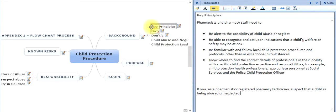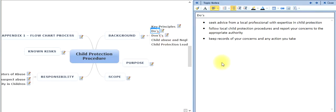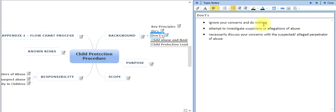If you as a pharmacist believe that a child is being neglected or abused, you should seek advice from a local professional with expertise in child protection, follow local child protection procedures and report your concerns to the appropriate authority, and keep records of your concerns and the actions you take. What you don't want to do is ignore it — it's certainly not in the best interest of the child. Do not attempt to investigate suspicions yourself; it's your job to report it, not investigate. And do not discuss your concerns with the suspected perpetrator of the abuse.